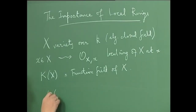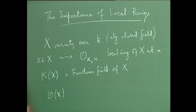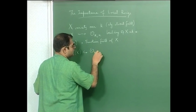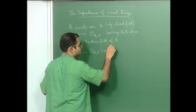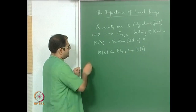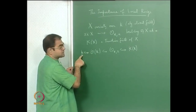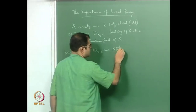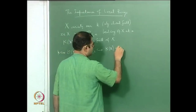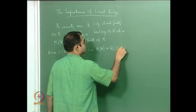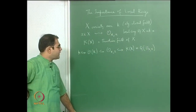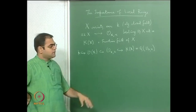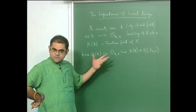O(X), the set of all global regular functions on X, is a subring of the local ring at every point, and that is contained in the quotient field. Also, k sits inside the regular functions as constant functions. In fact k(X) is actually the quotient field of O_{x,x}. And if you go to any non-empty open set U, then k(X) is the same as k(U) and O_{U,x} is the same as O_{X,x}.